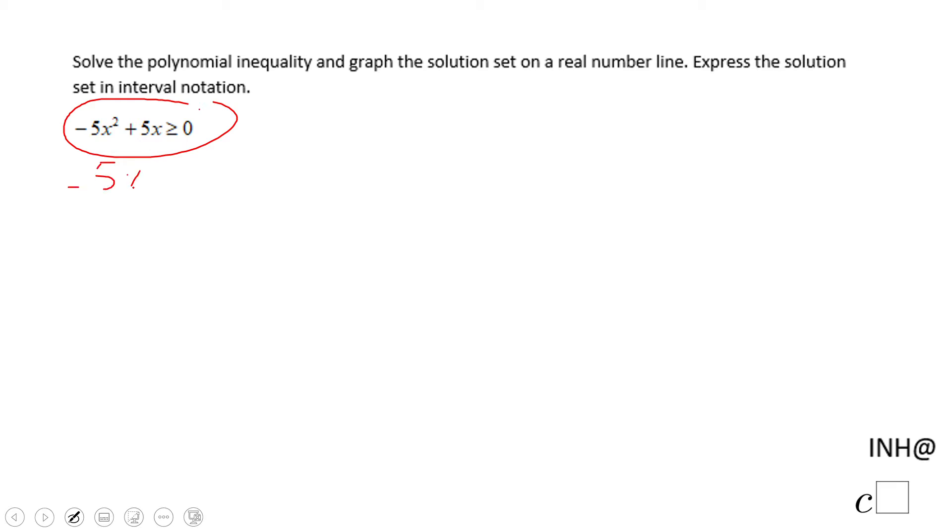Now find out when this polynomial is equal to zero. In this case we can factor out 5x.